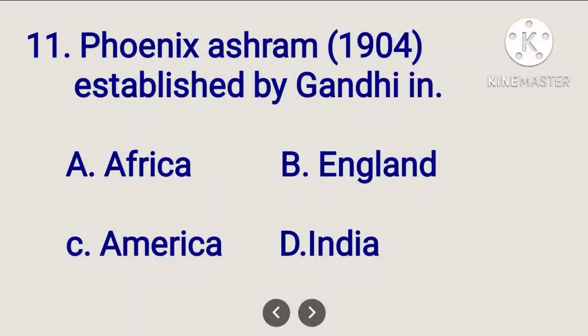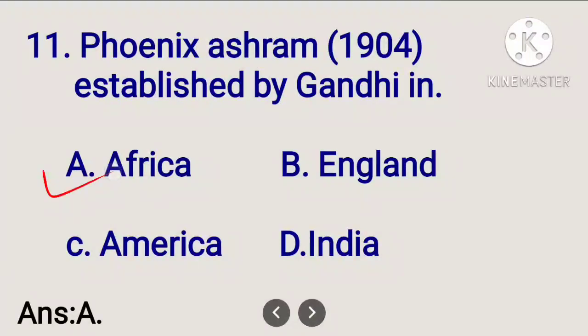Next, Phoenix Ashram was established by Gandhi. The options are Africa, England, America, and India. The Phoenix Ashram was Gandhi's first ashram, established in 1904 in South Africa.